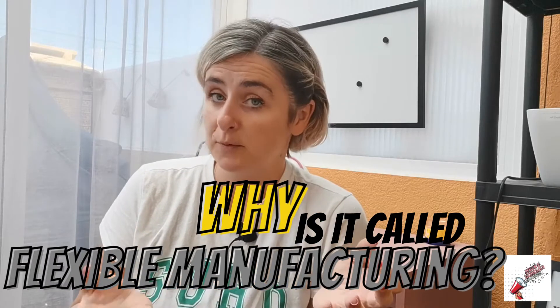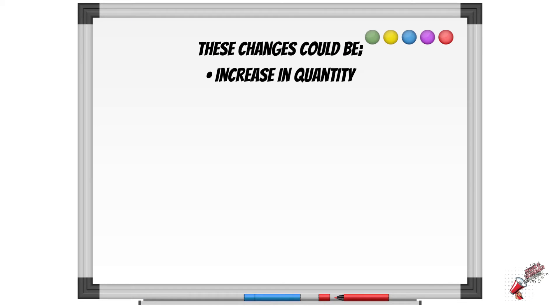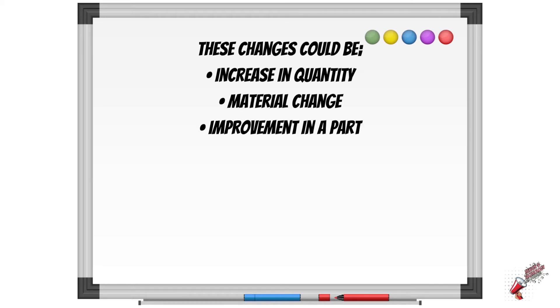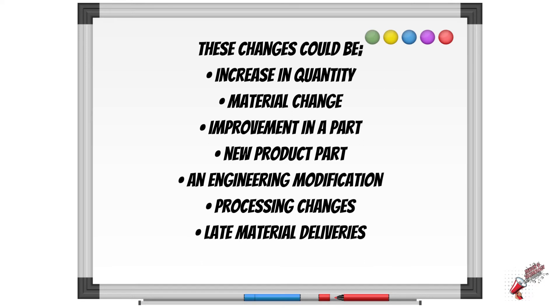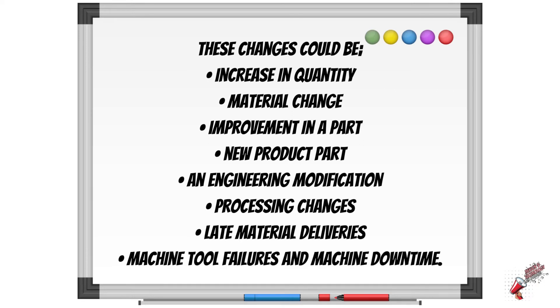Why is it called flexible manufacturing? The system is capable of handling different jobs by different machines at different workstations, which all come together as one item, product, or part. The flexibility comes because it is easily adapted for change. These changes could include increases in quality, material change, improvement in a part, new product parts, engineering modifications, processing changes, late material deliveries, and machine tool failure or machine downtime.